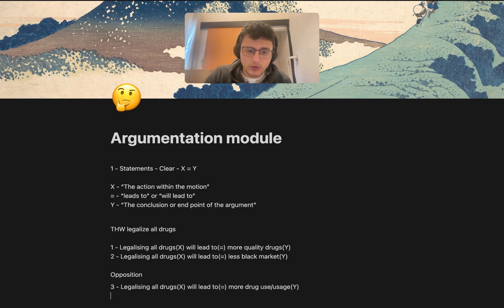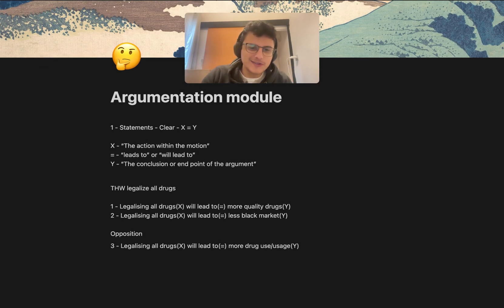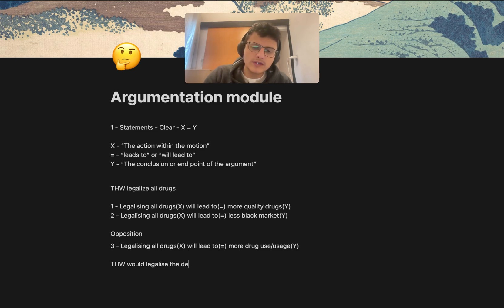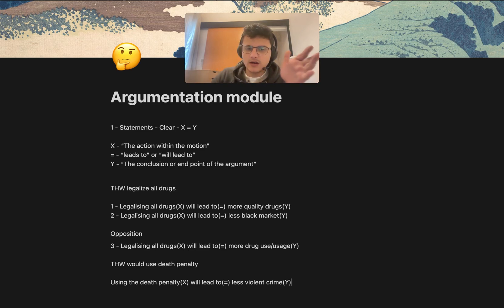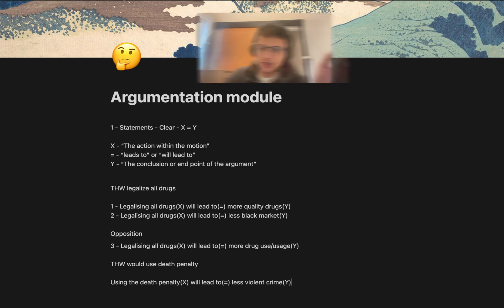Let's give another example from a different motion. Let's look at: 'This house would use the death penalty.' So the motion would be using the death penalty — that's the x part — will lead to — that's the equals part — less violent crime — that's the y part. In reality, the first two parts of the statement are always syntax based on the action within the motion, and the creative part is the y section.